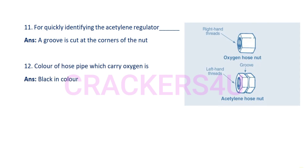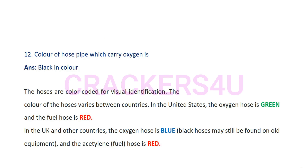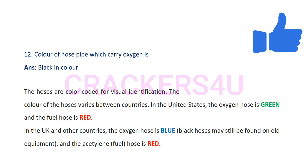Question 12: Color of hose pipe which carries oxygen is dash. Answer: Black in color. The hoses are color coded for visual identification. The color of the hoses varies between countries. In the United States, the oxygen hose is green and the fuel hose is red.